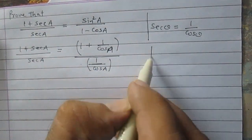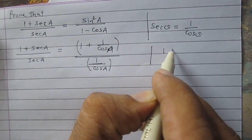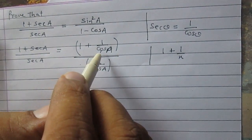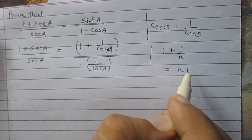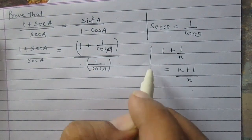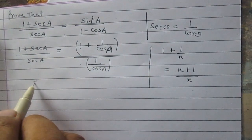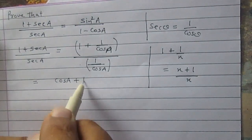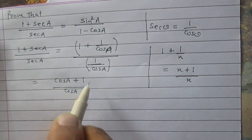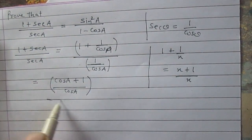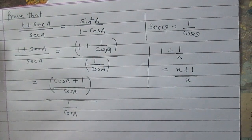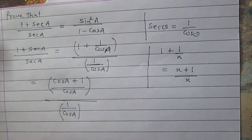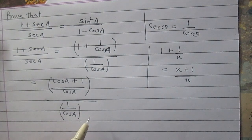Look at the numerator. It is in the form 1 plus 1 upon x, where x stands for cos a. Now, 1 plus 1 upon x can be written as (x + 1) divided by x. So the numerator 1 plus 1 upon cos a can be written as (cos a + 1) divided by cos a. The denominator remains as it is — it is 1 upon cos a.